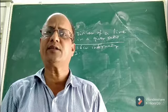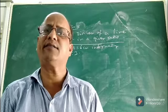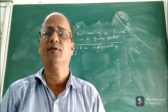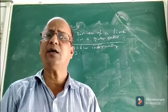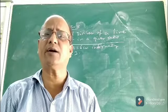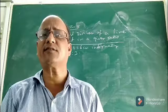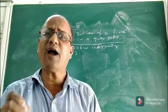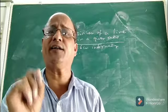In the previous class I was discussing how to divide a given line segment into n equal parts, where n is any positive integer. I hope you must have understood those things we discussed earlier. Today let us discuss the last part of this chapter — parallel lines — that is, how to divide a line segment internally in a given ratio.